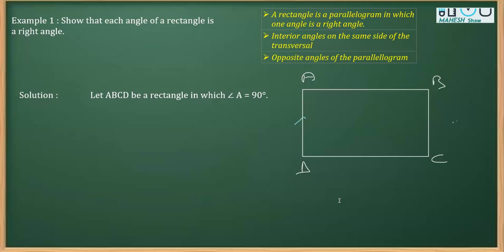So, let's say, for example, if I take these two lines as parallel, this and this are forming interior angles on the same side of the transversal. So, we can write angle A plus angle B is equal to 180 degree and you write this property that interior angles on the same side of the transversal are supplementary.